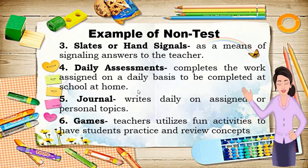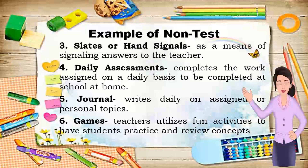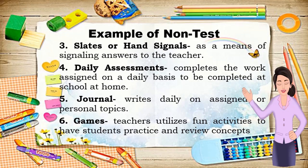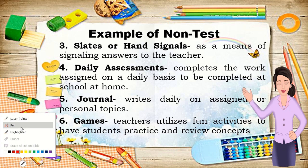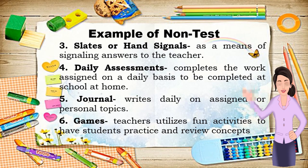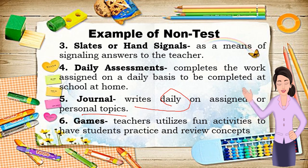Number three is slates or hand signals, where students signal their answers — for example, writing answers and holding up a slate during review questions. Number four is daily assignments, where students complete work assigned on a daily basis, either at school or at home, such as research or worksheets. Number five is journals, where students write daily on assigned or personal topics — for example, responding to the question: what do you remember most from yesterday's lesson?